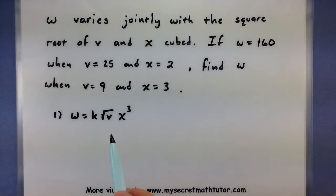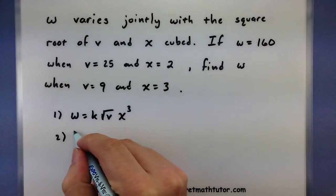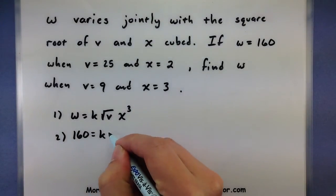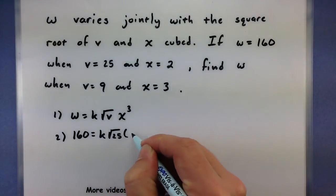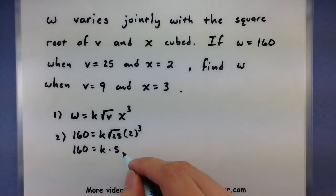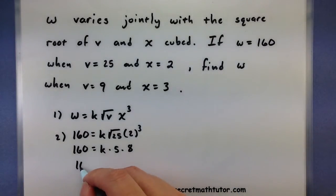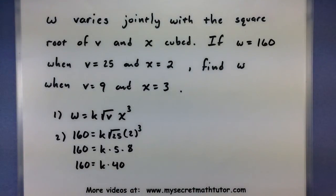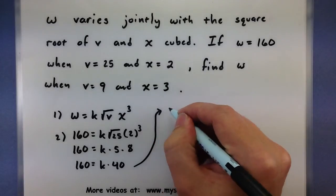Now if w equals 160, v equals 25, and x equals 2, then we can solve for that k. The only thing we don't know is k, but we can solve for it. Square root of 25, that would be 5. 2 cubed would be 8. So we have 160 equals k times 40. Divide both sides by 40 and we get that k is equal to 4.